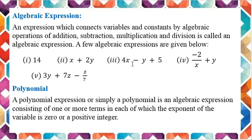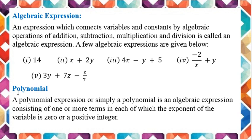Number 3: 4x minus y plus 5. In this example, x and y are the variables or unknowns, and 4 and 5 are the constants. In number 4: minus 2 upon x plus y. Here x and y are the variables and minus 2 is a constant. In example number 5: 3y plus 7z minus z upon 7. Here y and z are the unknowns or variables, and 3 and 7 are the constants.